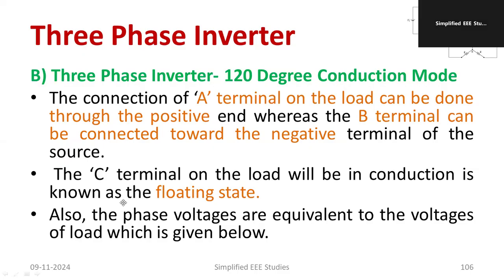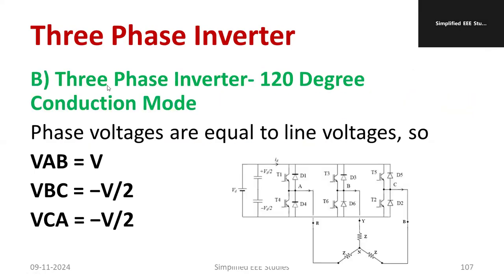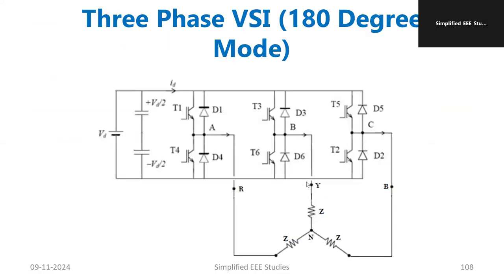Terminal C on the load will be in a floating state. The phase voltages equivalent to the load voltage are as follows: VAB equals V, VBC equals minus V/2, and VC equals V/2. You can use the calculations shown earlier for reference.